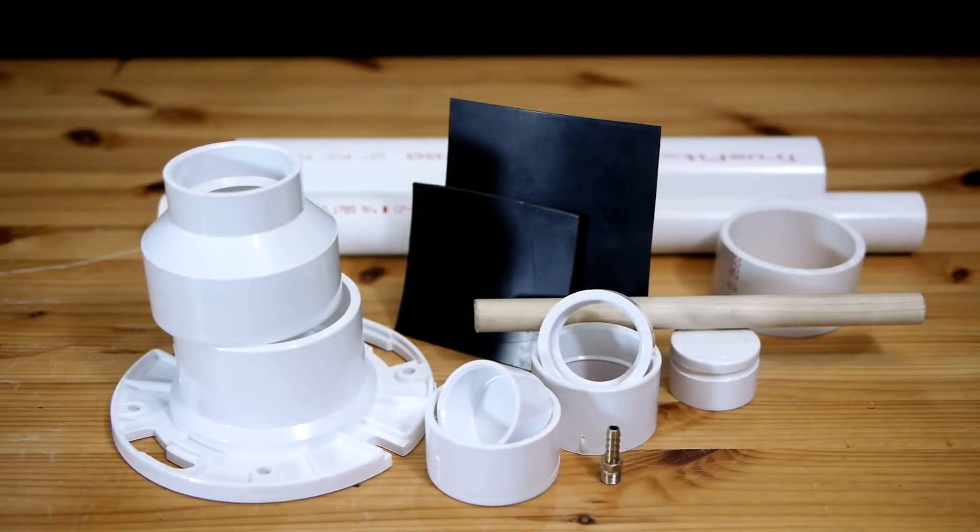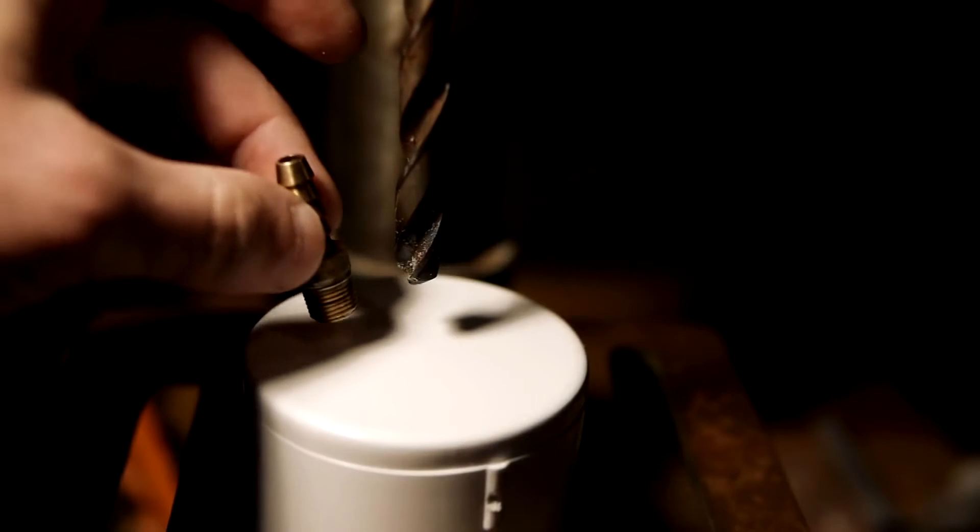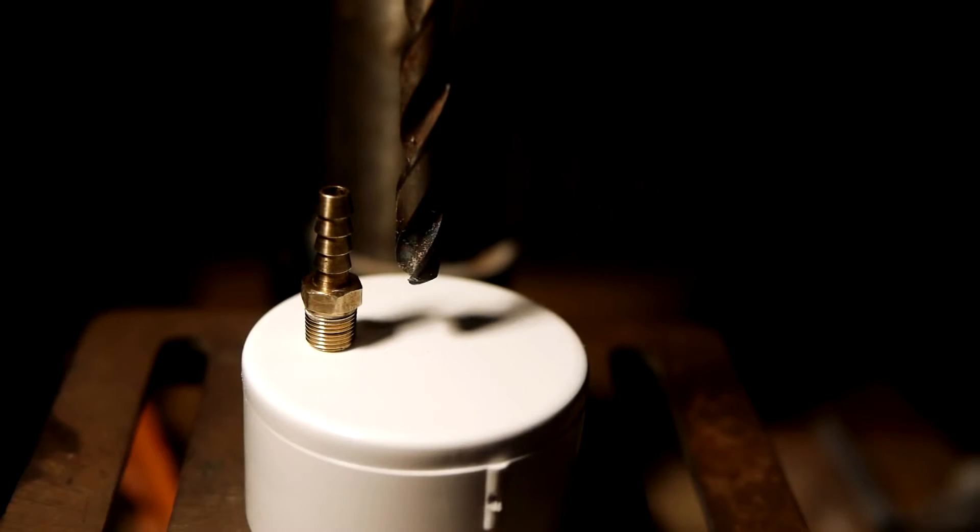This vacuum pump is composed of PVC pipe and fittings and two simple one-way valves that will be made using sheet rubber. Both valves will be mounted to a 2-inch PVC end cap, which will be modified first by drilling a hole to accept the threads on a quarter-inch hose adapter.